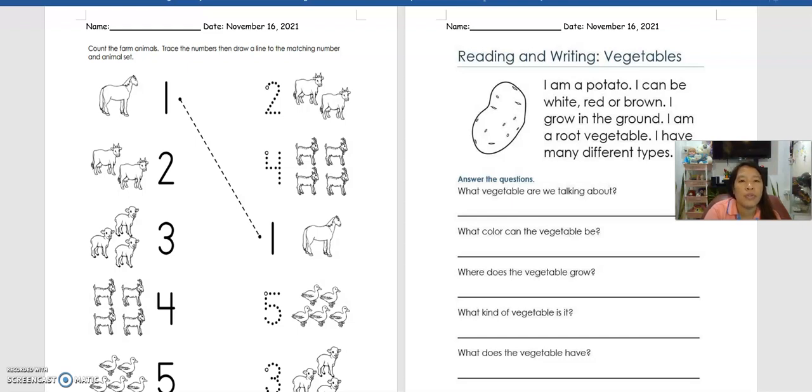Hi, how are you doing today? Today is Tuesday, November 16th, 2021. Today's activity, we're going to count the farm animals and then trace the number, then draw a line to match the number to the animal set.